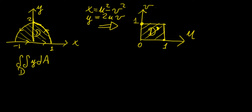In this video we're going to be looking at a problem expressed in terms of the x-y plane. We have a domain that is rather strange — a semicircle — with limits on x from -1 to 1, and we want to integrate the function y as a double integral over this region.